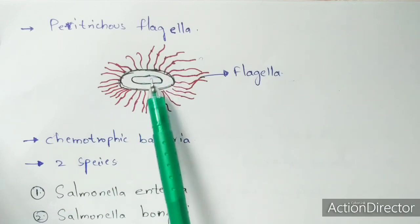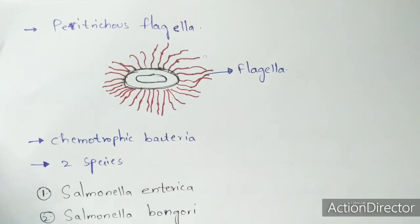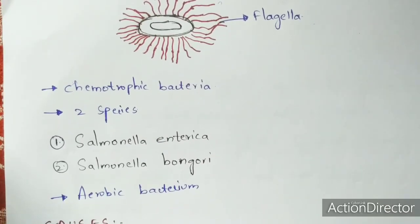Salmonella is a chemotrophic bacterium, meaning it generates its own ATP through oxidation of organic substances. There are many species of Salmonella; the two important species are Salmonella enterica and Salmonella bongori. Other species such as Salmonella typhi and Salmonella paratyphi are the main causes of typhoid fever.